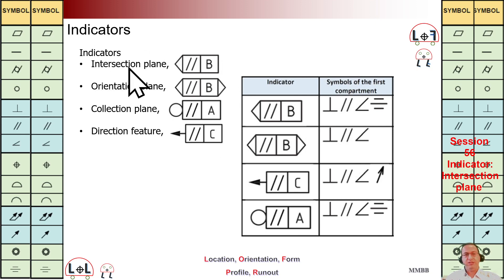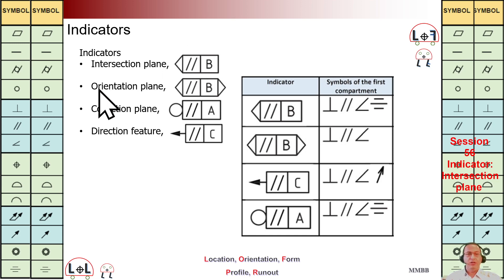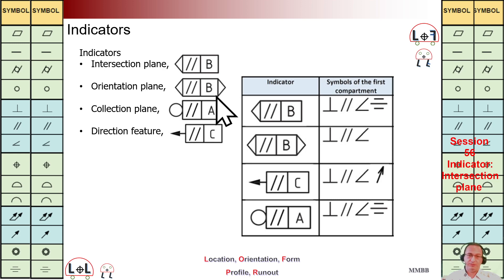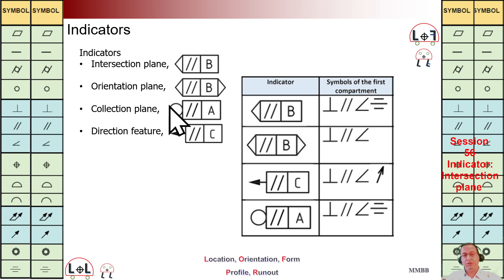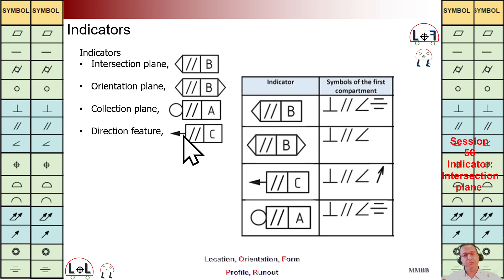Intersection plane — when we are going to have this symbol on the left-hand side. Orientation plane — when we are going to have this symbol on the left-hand side and on the right-hand side. Collection plane — when we are going to have this symbol on the left-hand side. And direction feature — when we are going to have this symbol on the left-hand side.